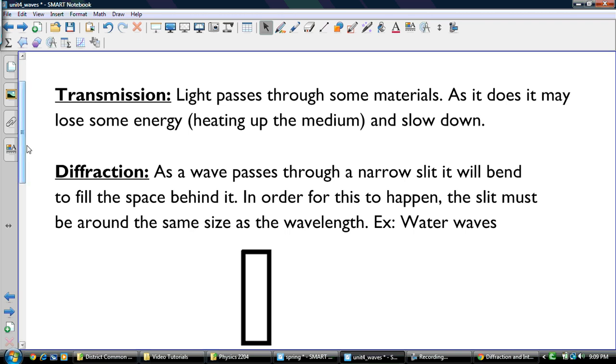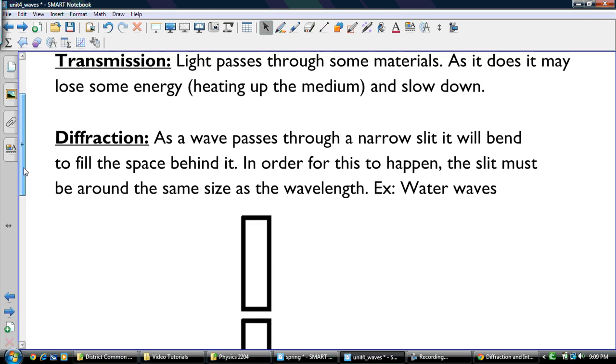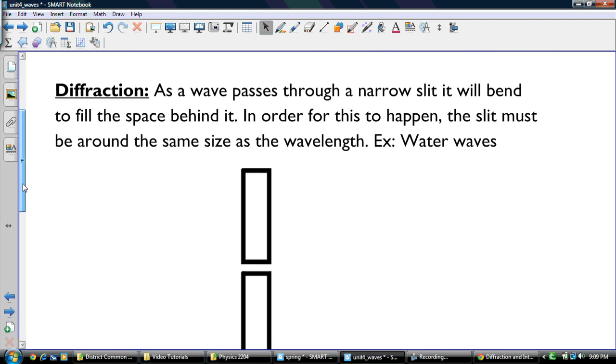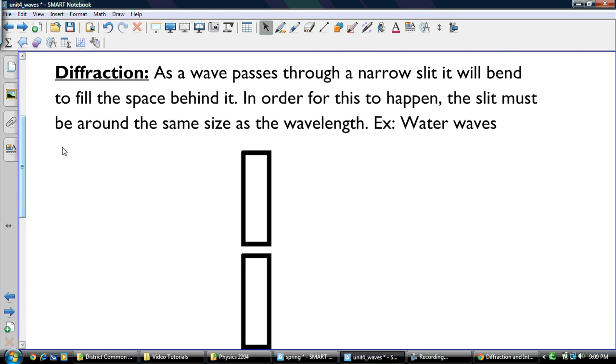The next thing we talked about was diffraction. And basically what that is, as waves pass through a narrow slit, it will bend to fill the space behind it. In order for this to happen, the slit must be around the same wavelength as the light.